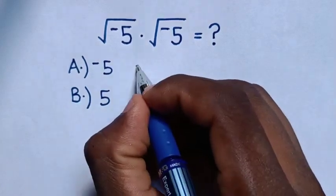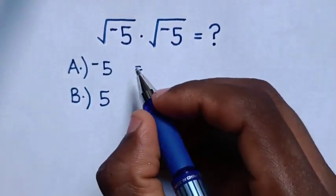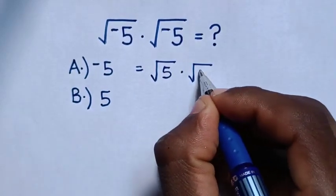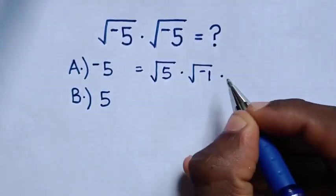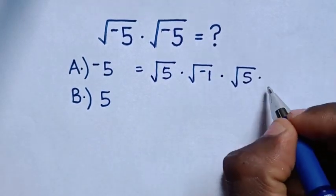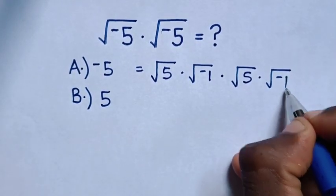So, this multiplication will be equal to square root of negative 5 is same as square root of 5 times square root of negative 1. Then times square root of negative 5 is same as square root of 5 times square root of negative 1.